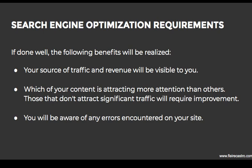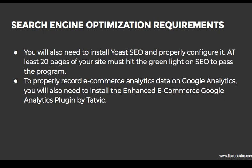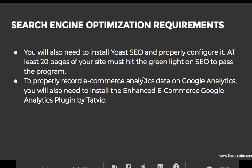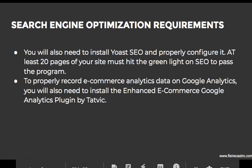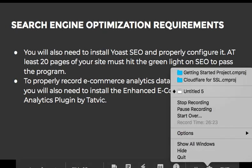Also from your website, you'll see which content is attracting more attention. If you created articles that are not attracting attention, maybe you should stop creating that and create other content. You'll also be aware of any errors from your site. Install Yoast and configure it at 20 pages. Record your e-commerce analytics on Google Analytics and install Hatbik. So that's it — let's get this together for our task number five.